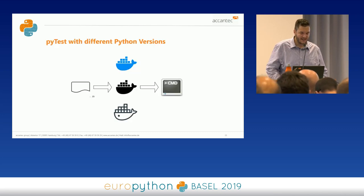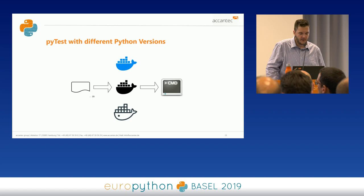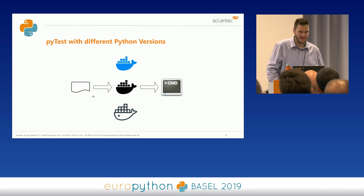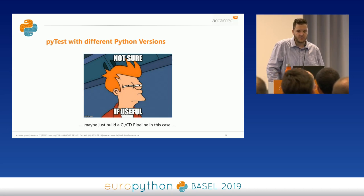Another idea was to save all your Python files in one folder, use it as a mount point, spin up different containers with different Python versions, mount your Python files there, and then run PyTest. I have to admit that when I started working out this use case, somewhere in the middle I thought: okay, it can work, but maybe it's not really useful. At that point, maybe just write a full CI/CD pipeline — that might be the better choice.